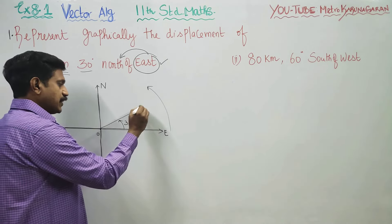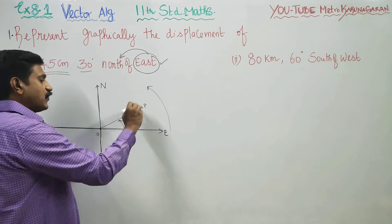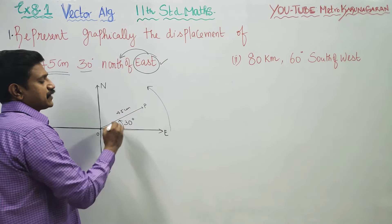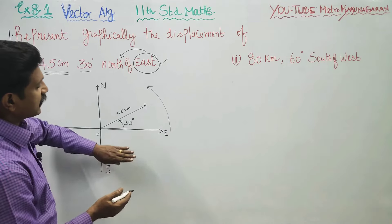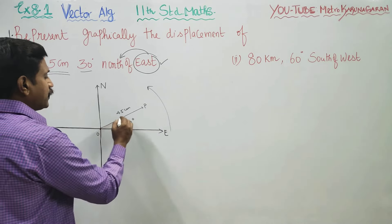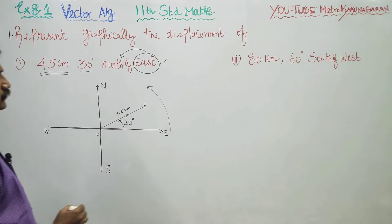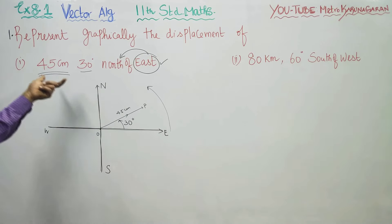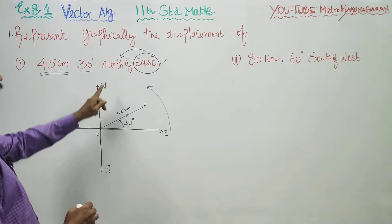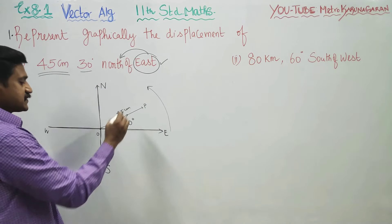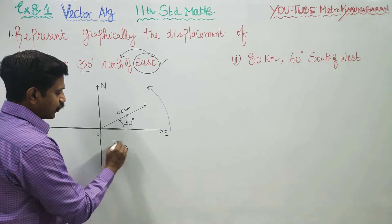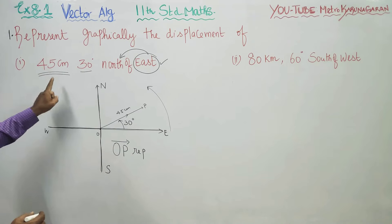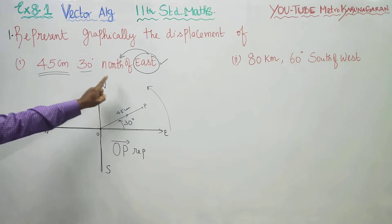After moving 30 degrees, the displacement is 45 centimeters. From O, you must move towards 45. The length of OP, if you look at the measurement, this measurement is 45 centimeters. The direction you move on — this vector OP represents graphically a vector of length 45 centimeters, 30 degrees north of east. This is my OP vector.